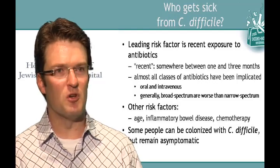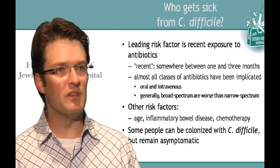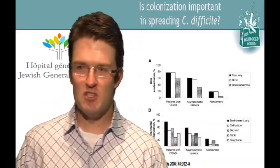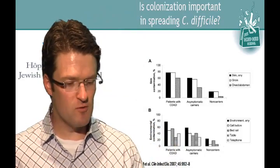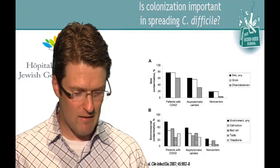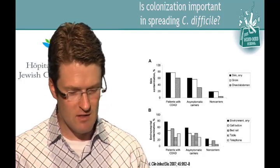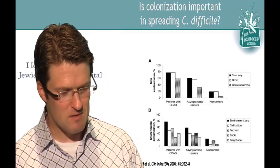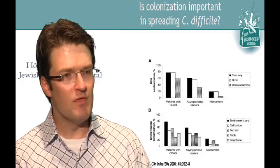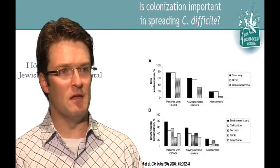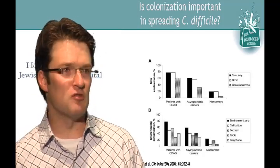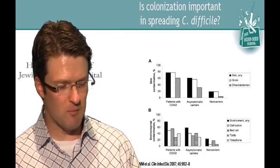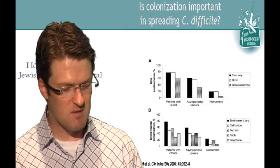Some people can be colonized with C. diff but remain completely asymptomatic — you'd never know it was there without a special test. Regarding colonization and spread: one study showed that about 80% of patients who actually have C. diff disease had detectable C. diff on their skin. For people colonized but not sick, about 60% had detectable C. diff on their skin. And even in the hospital, people who were neither sick nor colonized had detectable C. diff on their skin in about 15 to 20% of cases — probably because it's an environmental bacteria.